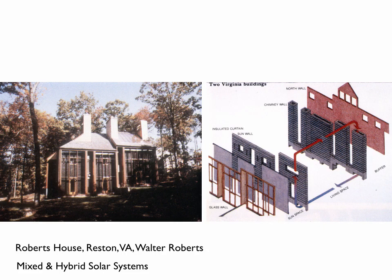Let's take a look at a couple of buildings. This is a house by Walter Roberts in Virginia, and it uses a whole series of systems. You can see on the left-hand side an image from an old Progressive Architecture magazine — that's the south facade — and on the right you can see a diagram about how all this works.